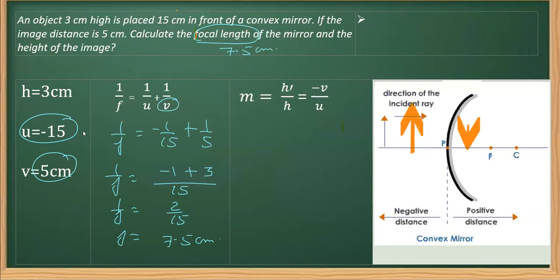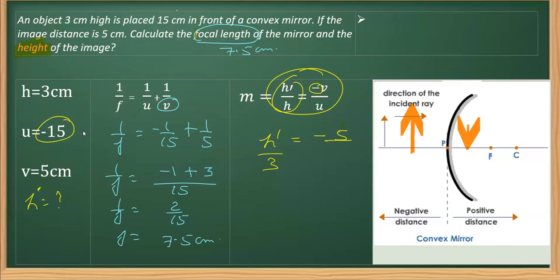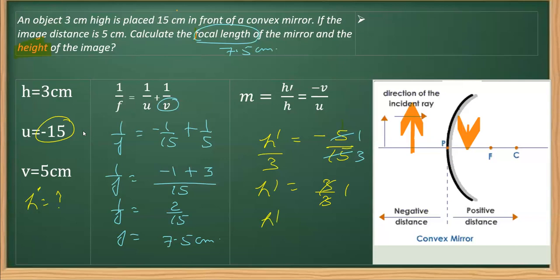This result is also consistent because the focal length of a convex mirror is always positive. Now for the height of the image, we use the magnification relation: h'/h = −v/u. We need to find h'. So h' = h × (−v/u) = 3 × (−5/−15). Substituting the values with u = −15 and v = 5, simplifying gives h' = 3/3 = 1 centimeter.